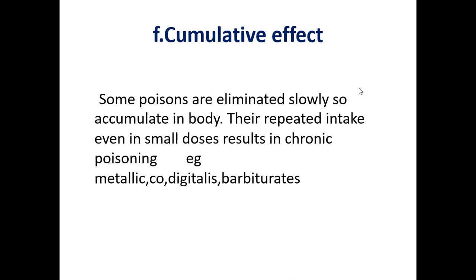Number six is cumulative effect. Some poisons are eliminated slowly and tend to deposit in different tissues of the body like bones, hair, and other parts. Their repeated intake even in small doses results in chronic poisoning because they accumulate in the body. Examples of such metallic poisons include arsenic, lead, mercury, carbon monoxide, digitalis, and barbiturates.